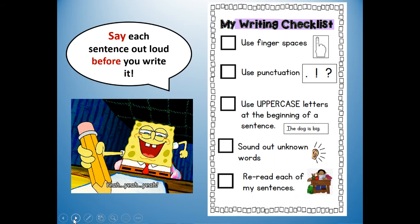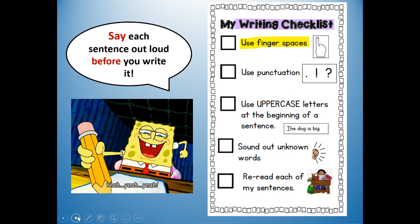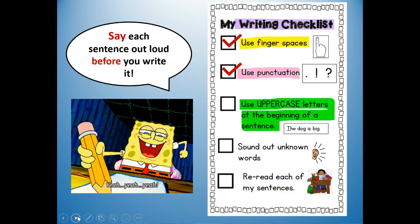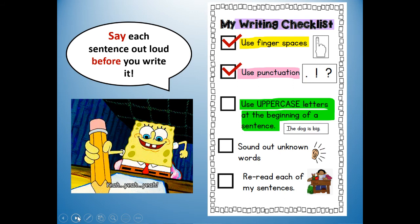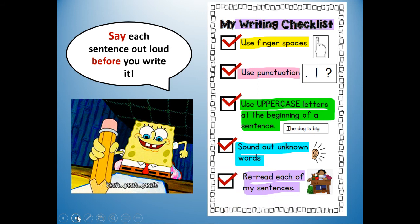Here's a writing checklist. When you write, make sure you use finger spaces between your words so they're not just one long word. Use punctuation — like a period at the end of each sentence. Use uppercase letters at the beginning of your sentence and capital letters for proper names. Sound out any unknown words you don't already know how to spell. And my favorite — re-read each of your sentences to make sure they look right and sound right.